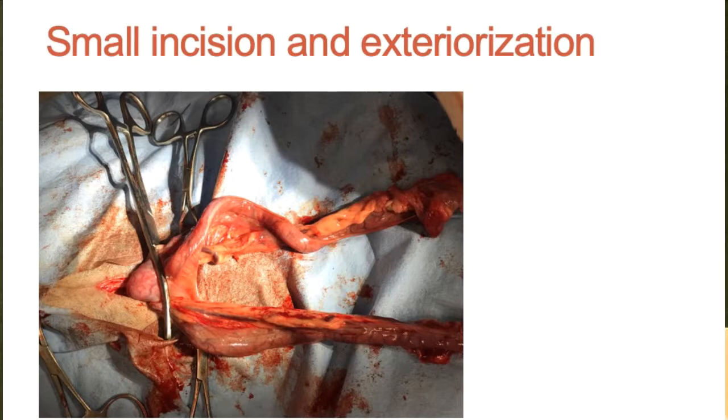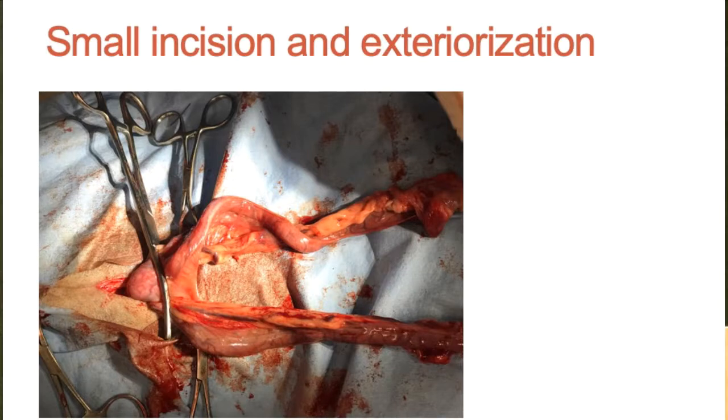When do we get away with exteriorization? The situation we all begin surgical training with is a spay — you make a small incision, exteriorize everything under fair traction, and you get away with it because you're removing what you're exteriorizing. The compromised blood flow doesn't matter because it's coming out anyway. When this doesn't work is if you try the same idea with an enterotomy: haul the bowel loop out through a tiny incision, let it sit with semi-strangulation occurring for half an hour — that's not going to go well.